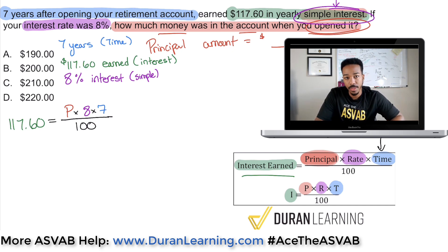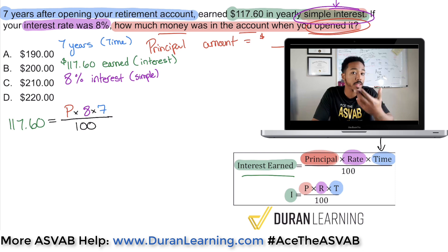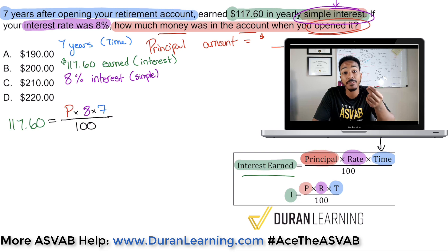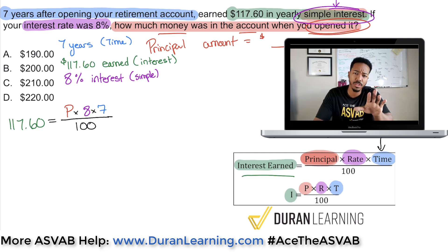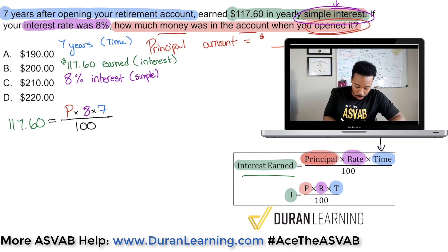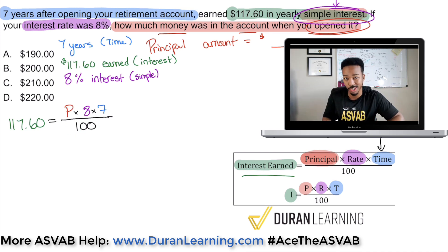So here's what we're going to do now — we're going to solve for P. When you're solving equations, the art of solving equations is working backwards. You have to perform the opposite operations to get that variable by itself. So we have to find P. What's in the way? We see it's being multiplied by 8, multiplied by 7, and all of it is being divided by 100. So we've got to get rid of all three of those operations, and I'm going to do it one thing at a time.